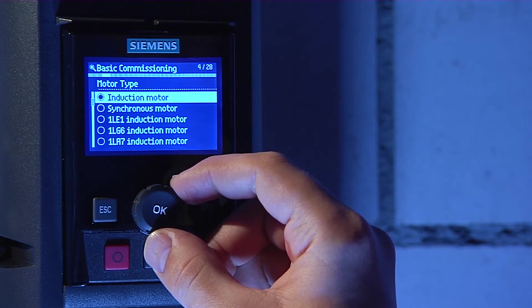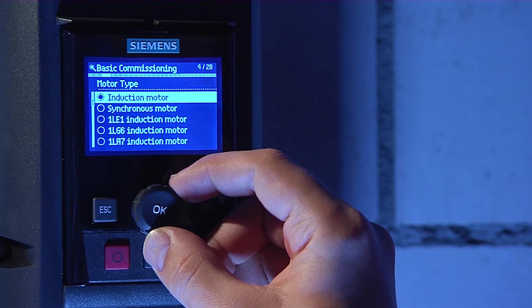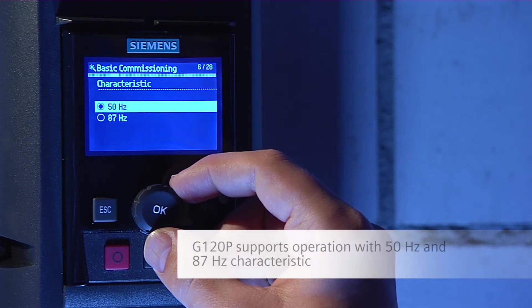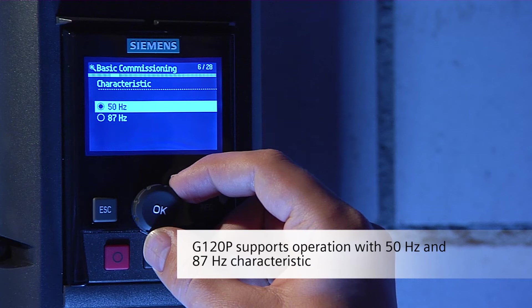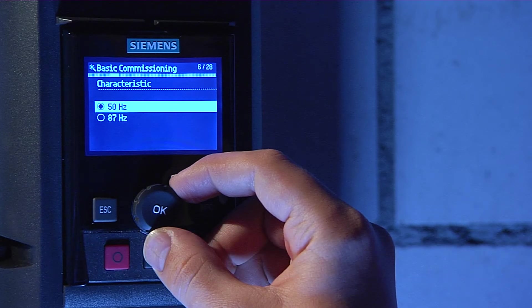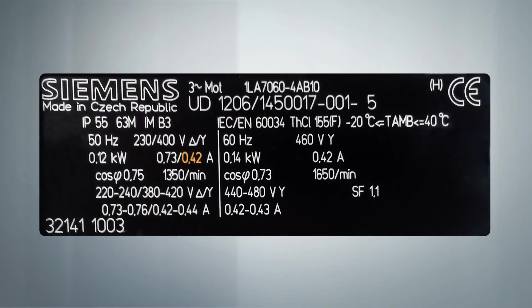Next step is the selection of the motor characteristic. The 87 Hz characteristic allows you to speed your motor up to 87 Hz without the risk of field weakening. However, please carefully study the motor rating plate. As a motor operated with the 87 Hz characteristic might require higher currents which must be supported by the variable speed drive selected.